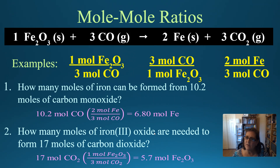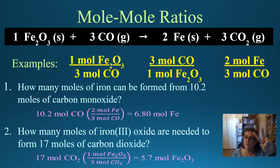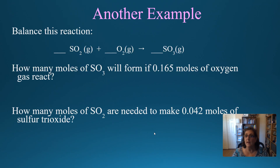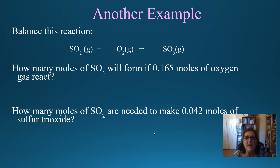Why is the answer 5.7 and not 5.7-something? Because we started with two sig figs — 17 has two sig figs — so we round to 5.7 moles Fe2O3. Now let's look at another example. I want you to balance this reaction and answer the two questions — pause and do this. On my exams, students miss mole ratio calculations because they try to make it more difficult than it really is. Make sure you understand these before we move on.